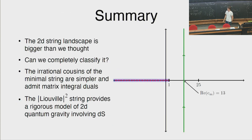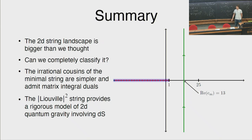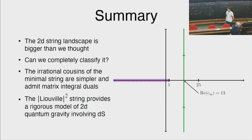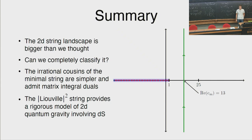To summarize: the 2D string theory landscape is bigger than we thought. I explained two new entries. A natural question is whether this is all—can we completely classify it? One entry has real matter central charges, the other has complex matter central charges. Both can be thought of as irrational cousins of the usual minimal string theory, both admit matrix model or two-matrix model duals. The Liouville squared string is interesting for physicists because it gives a rigorous model of 2D quantum gravity involving de Sitter vacua as well as anti-de Sitter vacua. Thank you very much.